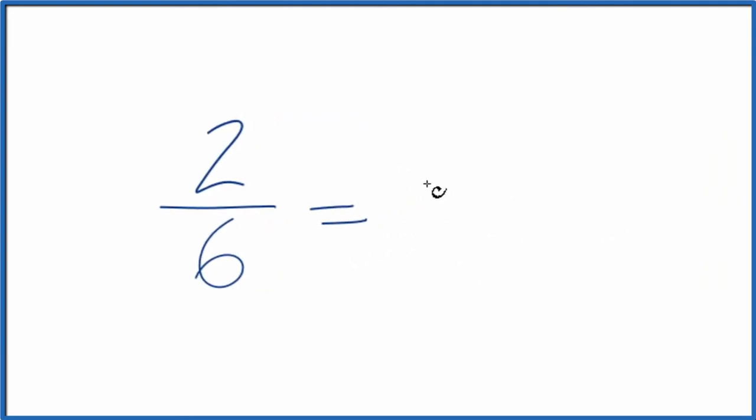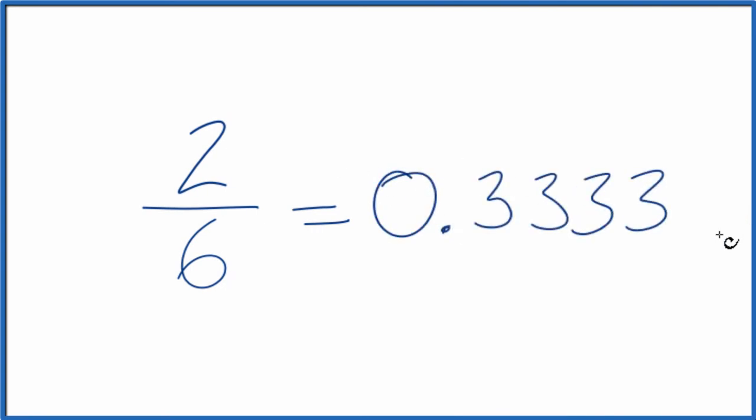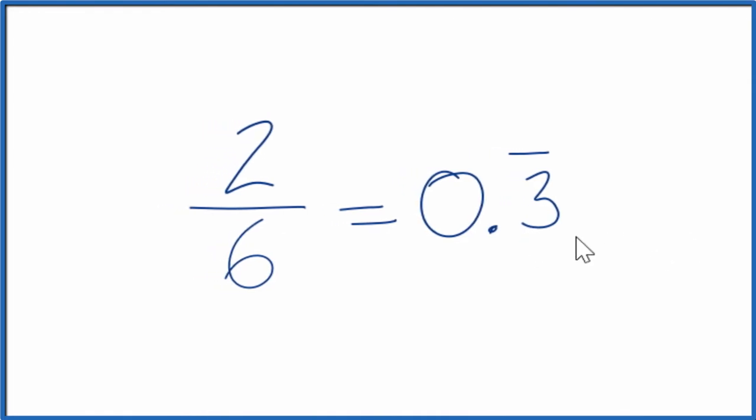When you do that, you end up with, and the 3's, they just keep going. So let's just call it 0.3. If we put this bar over here, then we can get rid of these. And this just shows us that the 3 keeps repeating.